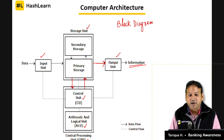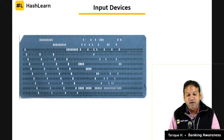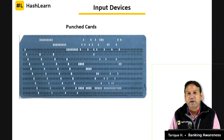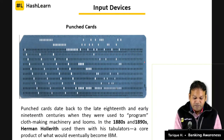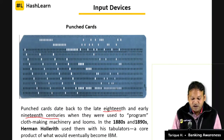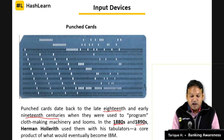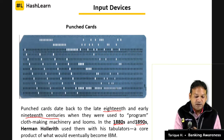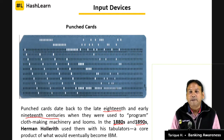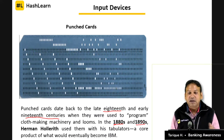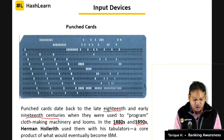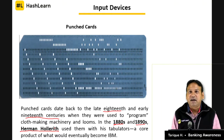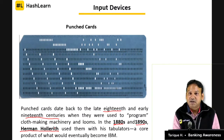That is the basic block diagram of how the computer works. To summarize: we have the input unit and output unit; the CPU containing the Control Unit and ALU where mathematical calculations are done; and the storage unit with primary and secondary storage. Now let us move to input devices. The first is the punch card — a very old input method dating back to the late 1800s.